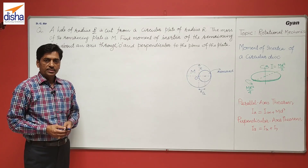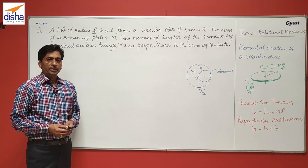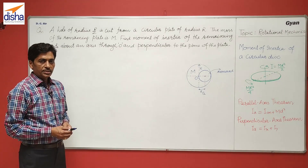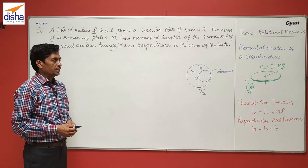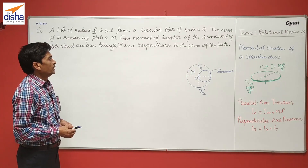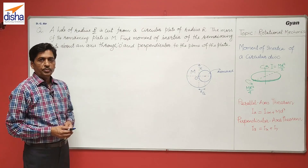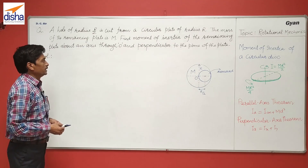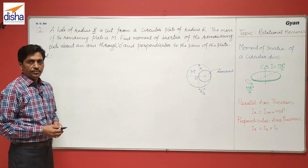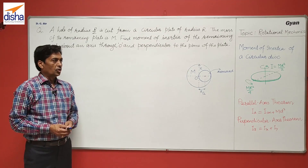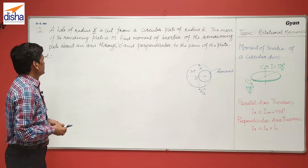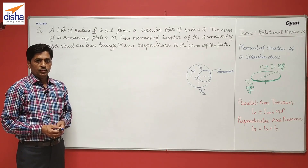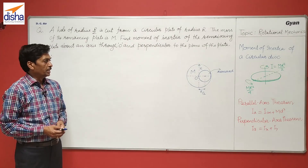I am going to discuss the problem of moment of inertia. The problem is: a hole of radius R/2 is cut from a circular plate of radius R. The mass of the remaining plate is capital M. We have to find the moment of inertia of the remaining plate about an axis going through the center and perpendicular to the plane of the plate.